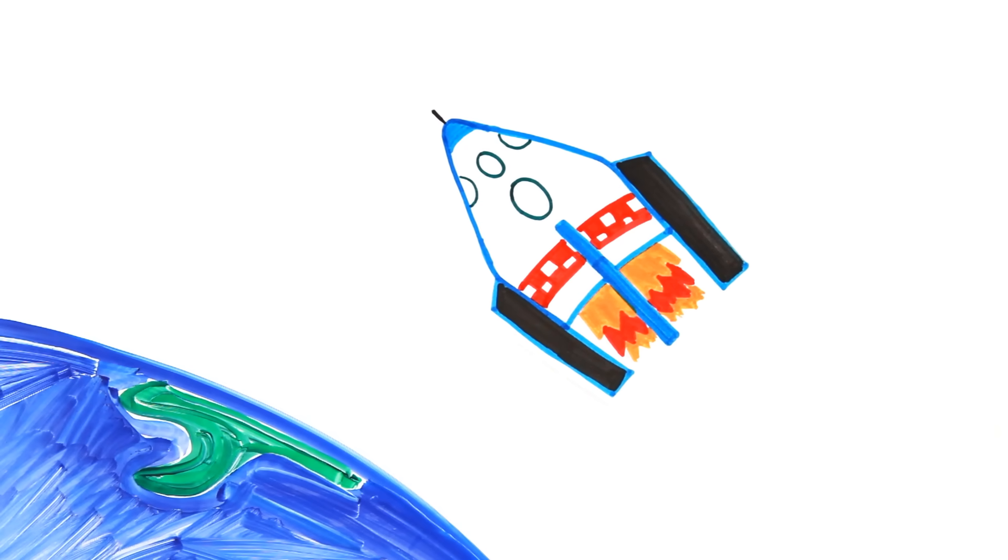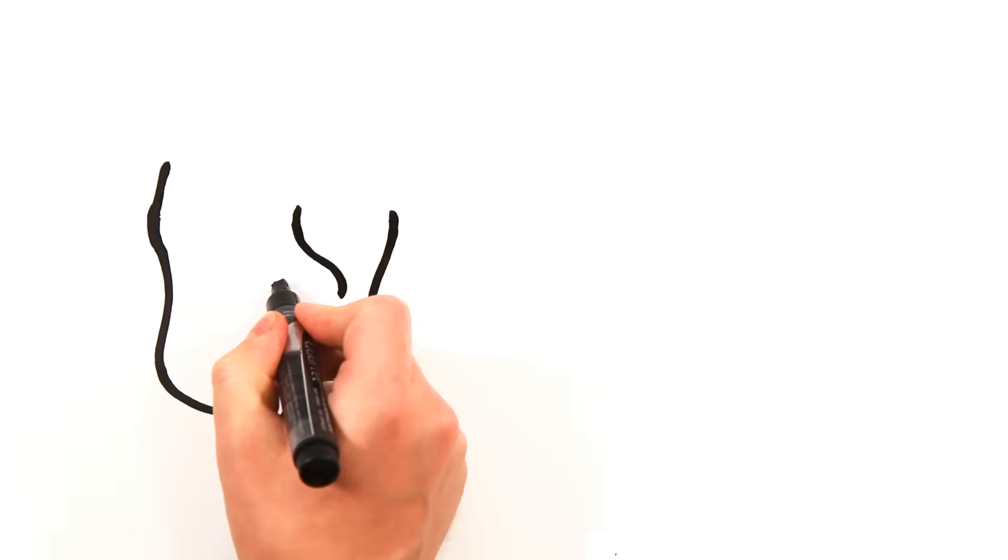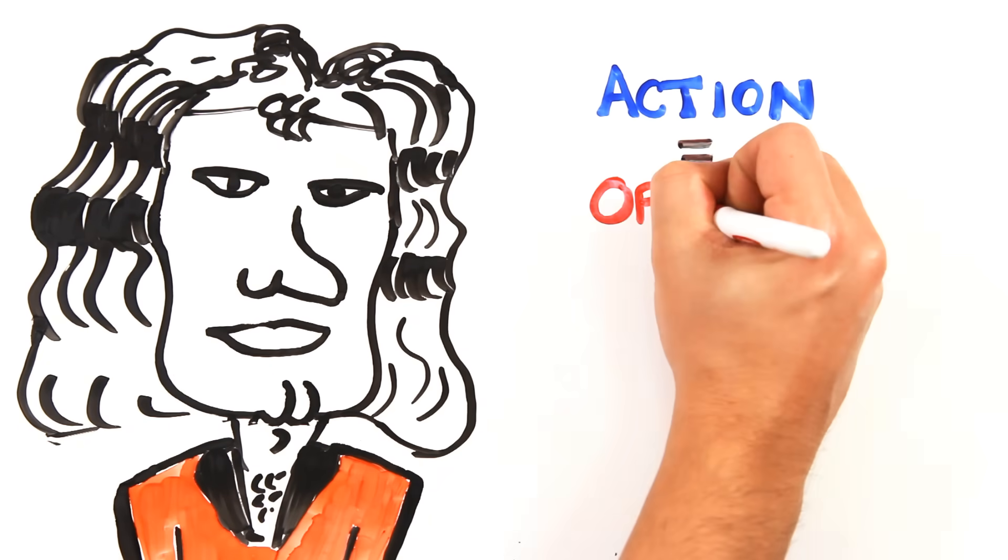Any time a spacecraft or satellite comes in close proximity to a planet, gravity grabs hold. And if the spacecraft arrives at the perfect angle, it's able to use some of the planet's velocity to catapult it further into space. This extra energy comes from the planet's own energy of motion around the Sun. But, as Newton famously said, to every action, there is an equal and opposite reaction.